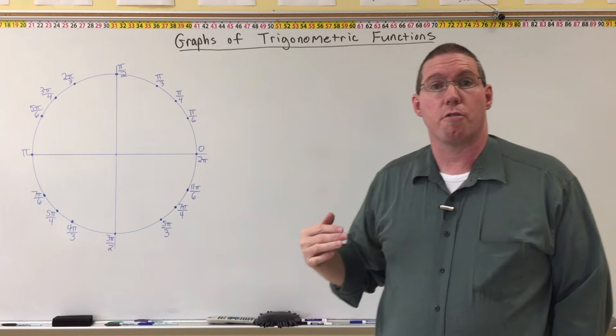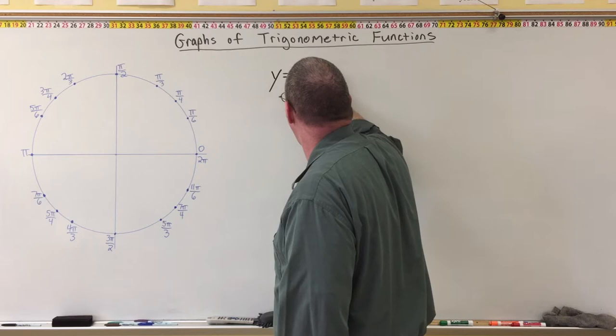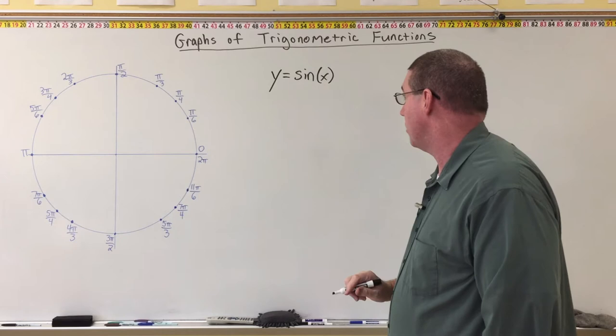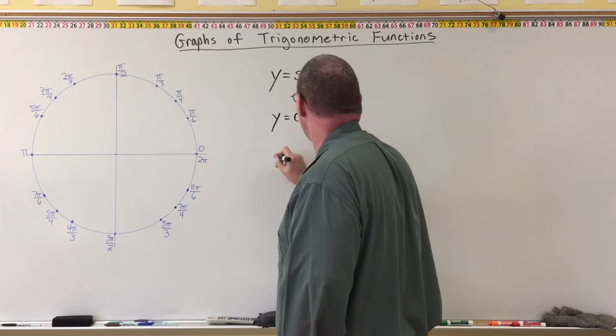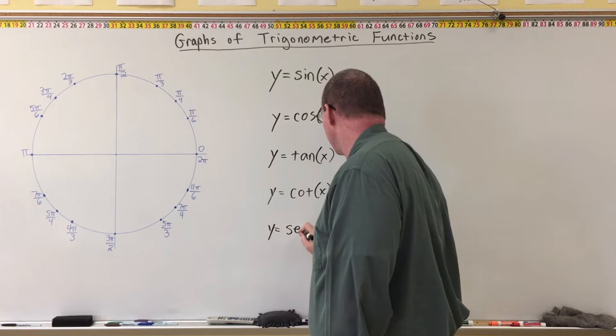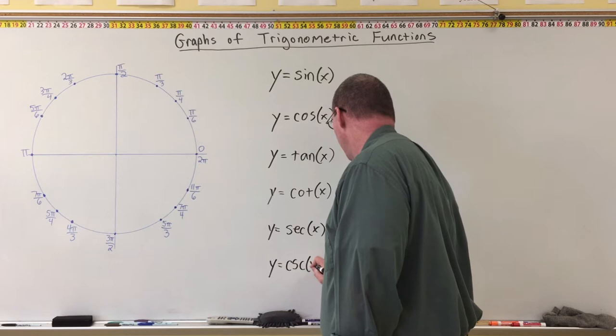We're now going to take our trigonometric ratios and understand them as functions. We can say that y is equal to sine of x, where the angle measure is the input and the output is whatever sine is of that angle. We can also have y equals cosine of x, y equals tangent of x, y equals cotangent of x, y equals secant of x, and y equals cosecant of x.